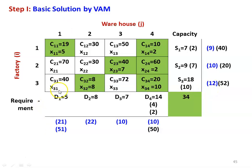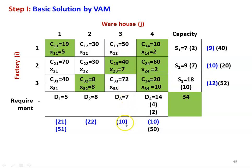Then we take the columns. In the first column, the lowest value is 19 and the next lowest is 40, difference is 21. In the second column, the lowest value is 8, the next lowest is 30, difference is 22. In the third column, the lowest value is 40, the next lowest is 50, difference is 10. In the fourth column, the lowest value is 10, the next lowest is 20, difference is 10.